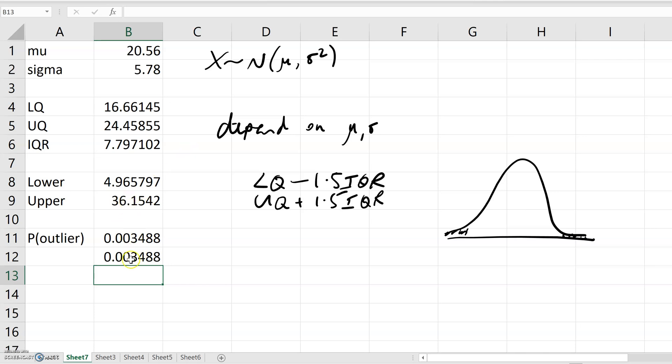So I don't actually need the upper threshold because the curve is symmetric. What I'll do instead is just put 2 times that. So the probability that a randomly selected observation from X is an outlier is given by this.